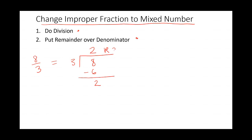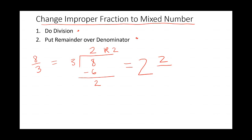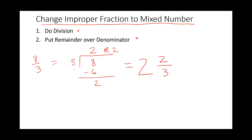Now I write it up here: r2. So it's whole number 2, remainder 2. Now put the remainder over the denominator — that's the next step. So we say equal sign, write the whole number 2, take the remainder as the numerator, draw our fraction bar, and put the denominator 3. And there you go — we have converted from an improper fraction to a mixed number.